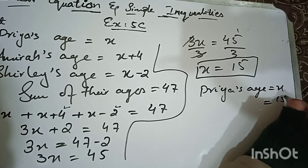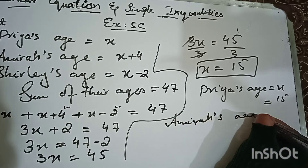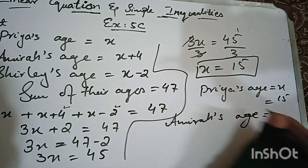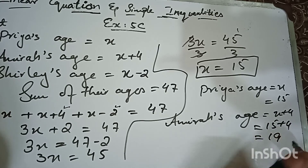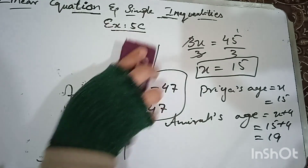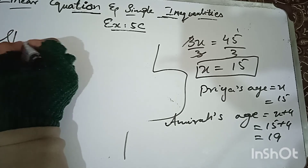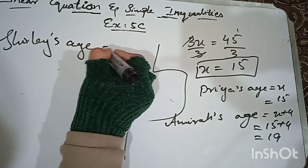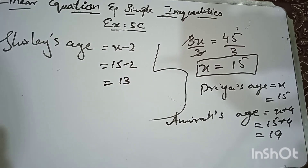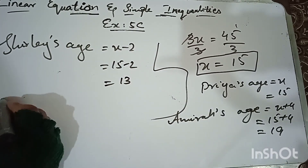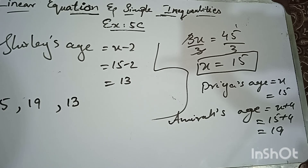Priya's age is x, so Priya is 15. Amira's age is x + 4, so 15 + 4 equals 19. Shirley's age is x − 2, so 15 − 2 equals 13. Therefore their respective ages are: Priya is 15, Amira is 19, and Shirley is 13.